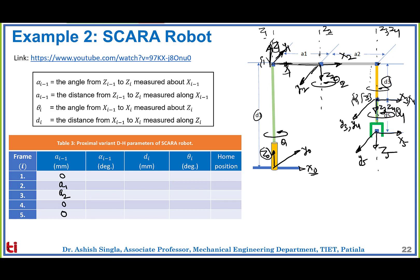Next comes the link twist angle alpha(i-1). Z0 to Z1 along X0 are in the same direction so the angle is 0. Z1 to Z2 along X1: Z1 is upwards and Z2 is downwards, so there is an angle of 180 degrees (pi). Z2 to Z3, Z3 to Z4, and Z4 to Z5 all have angle 0 because all Z axes are downwards.